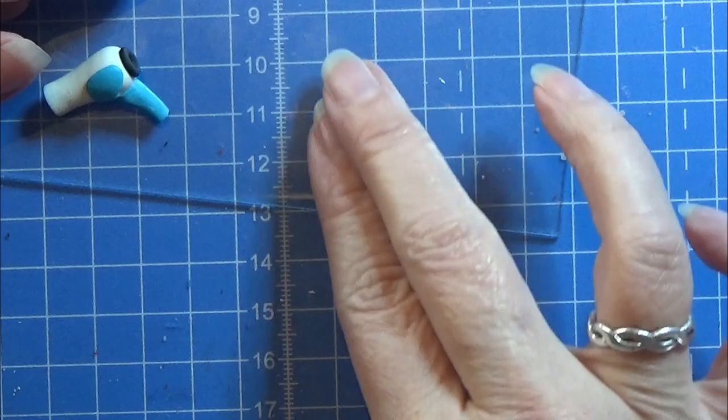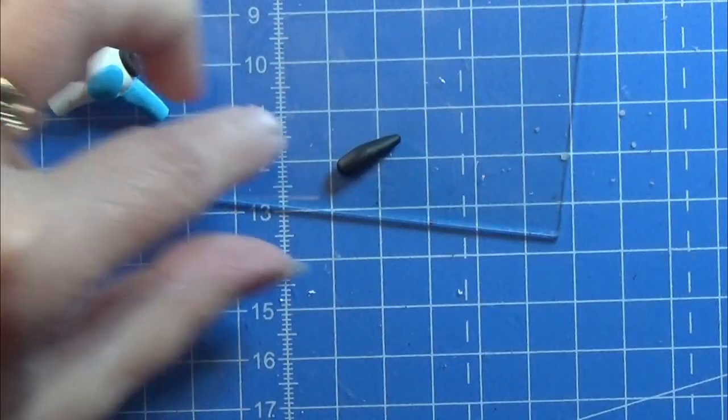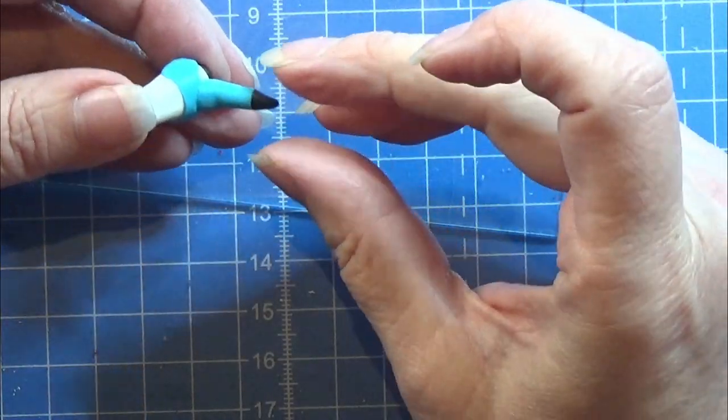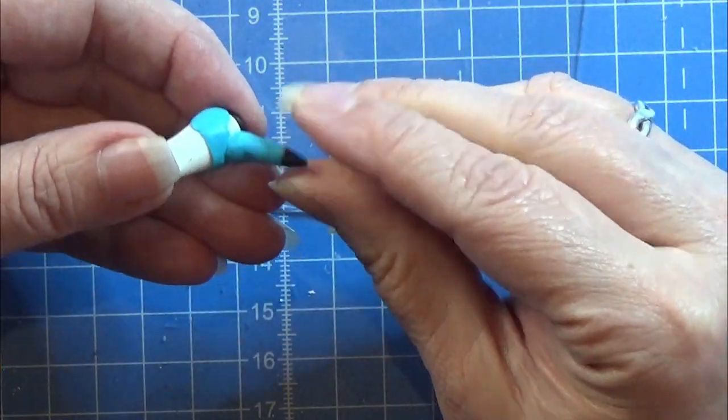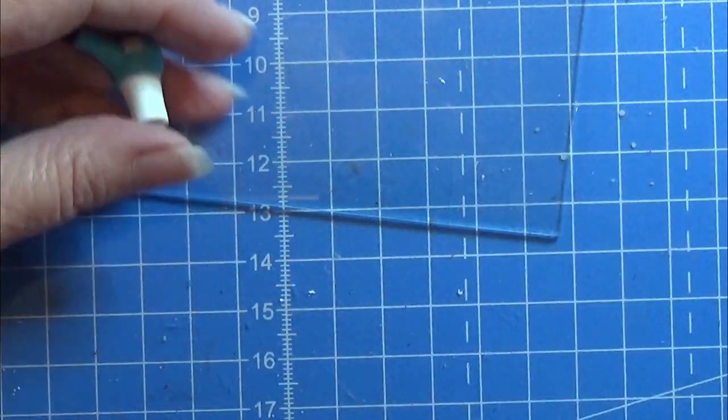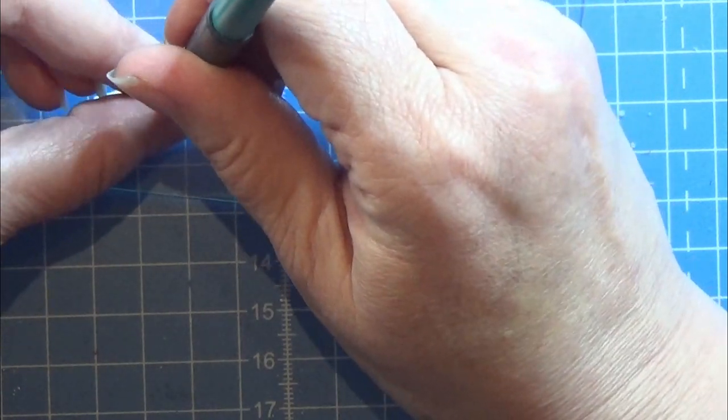I'm going to take a tiny piece of black clay and roll it into a pointy thing, cutting off the little point here and putting it on the end of the handle just like this. I'm actually going to poke a tiny bit of a hole in the end of this for the cord.